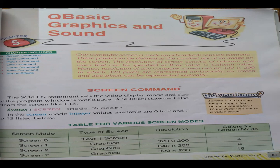After that, we have screen 1 and 2, where graphics and resolutions are given. The resolution for screen 1 is 320 into 200. Resolution always defines the image in terms of pixels. The pixel is the smallest dot of an image. In screen 1 we can use 4 colors. Screen 2 is also a graphical screen where the resolution is 640 into 200, and 2 color modes are available.